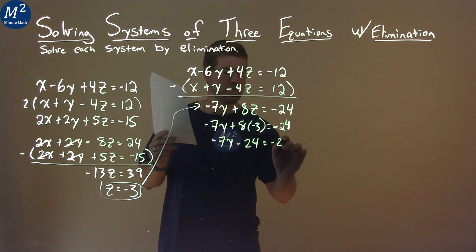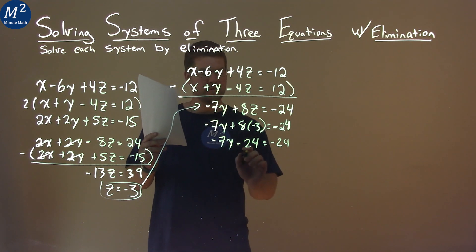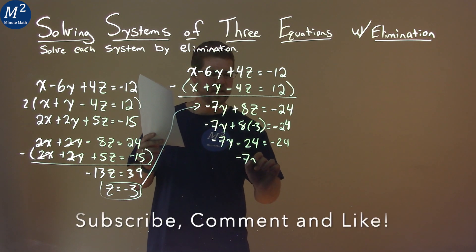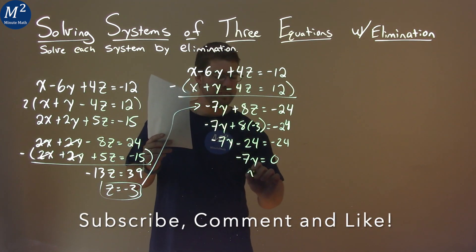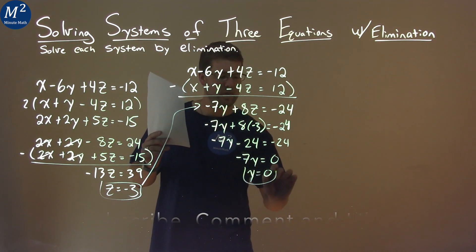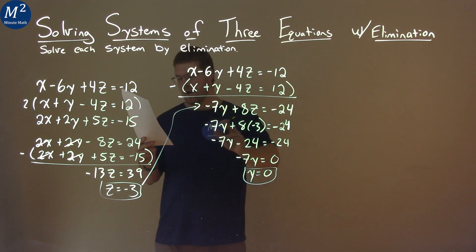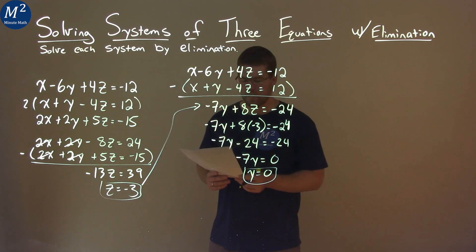Let's keep the negative 7y here. 8 times negative 3 is negative 24, equals negative 24. Add 24 to both sides, and that equals 0. Negative 7y equals 0. Divide both sides by negative 7, and y equals 0. So now we have z equals negative 3, y equals 0. Let's go solve for x.